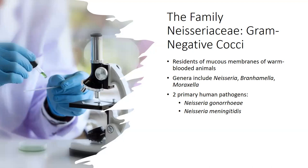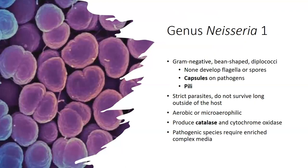You can have Neisseria, Branhamella, and Moraxella — Neisseria being the most common and most commonly discussed. The two primary human pathogens are Neisseria gonorrhoeae and Neisseria meningitidis — obviously you can see which one causes which. Neisseria gonorrhoeae causes your classic gonococcal infection, your STI; Neisseria meningitidis causes meningitis. Both are gram-negative cocci. The Neisseria genus is gram-negative, bean-shaped diplococci — circular with a slight impression, almost like a brain or heart shape.